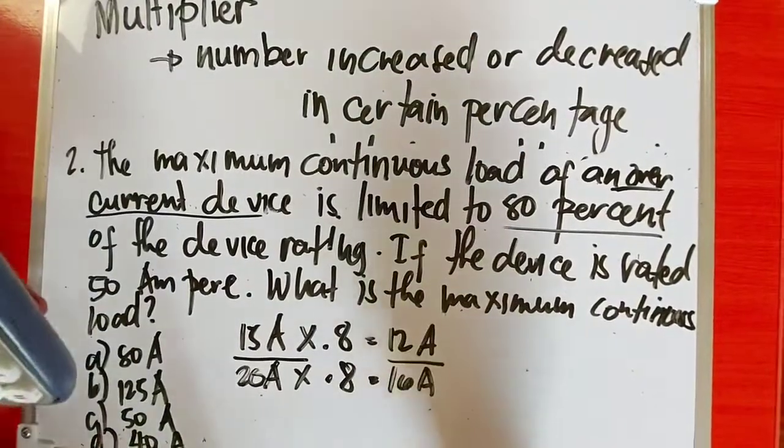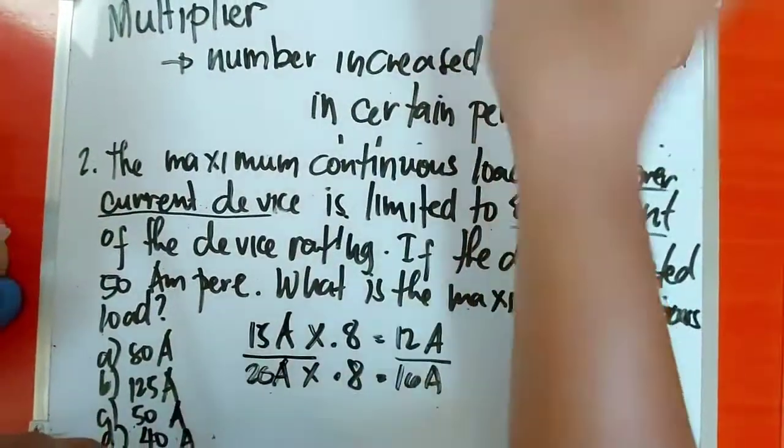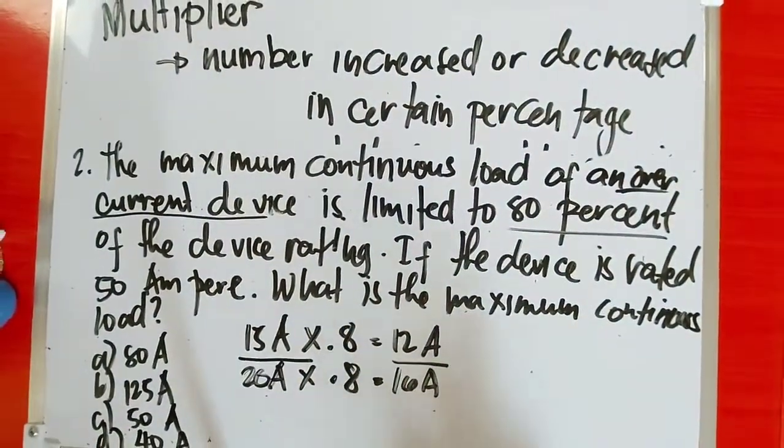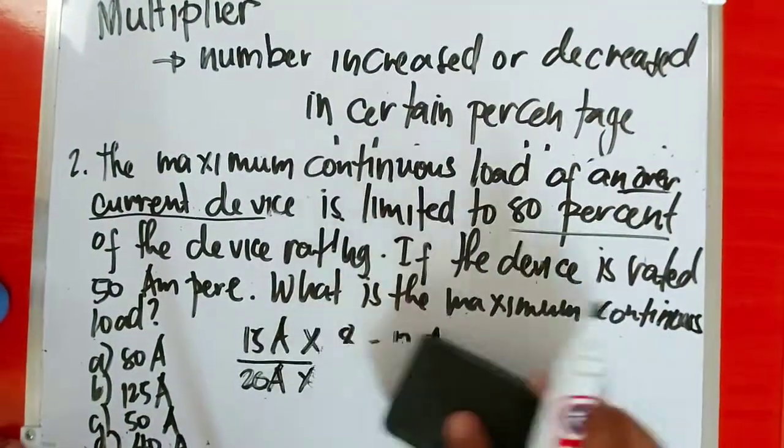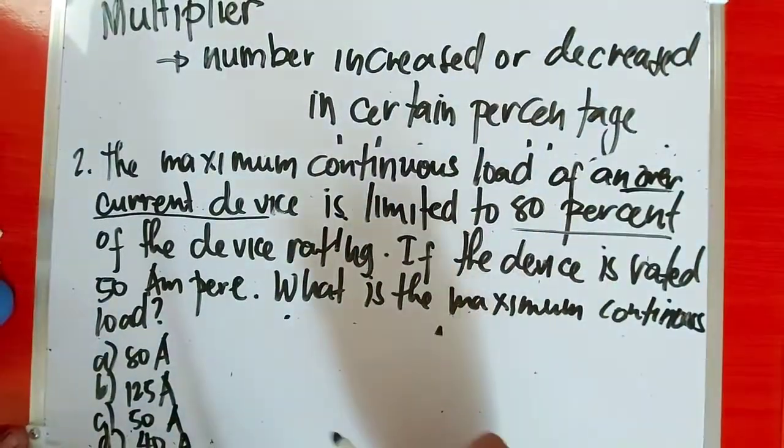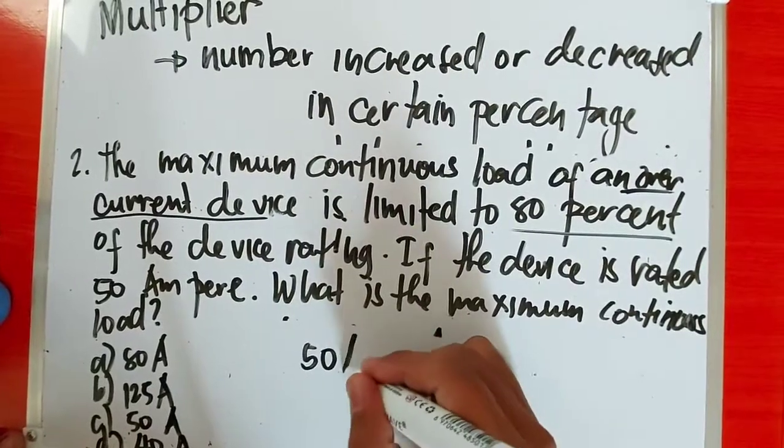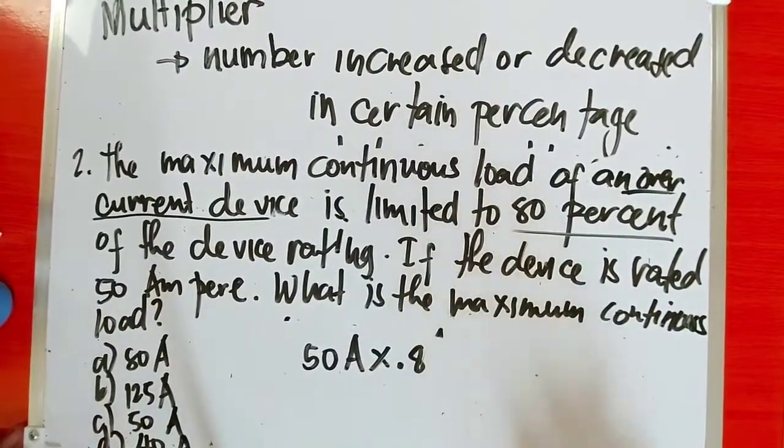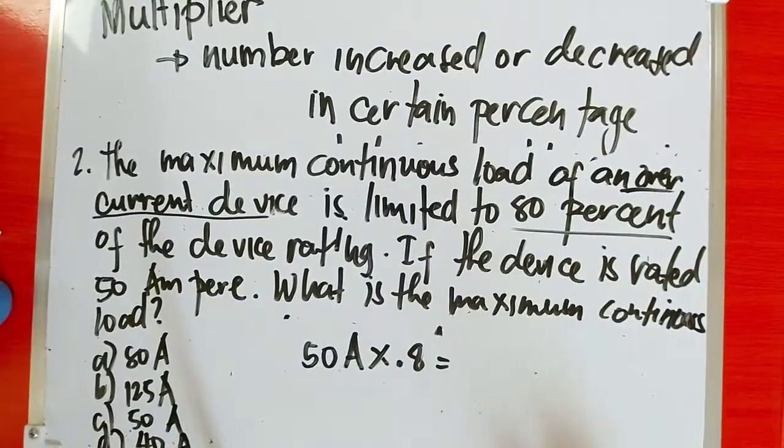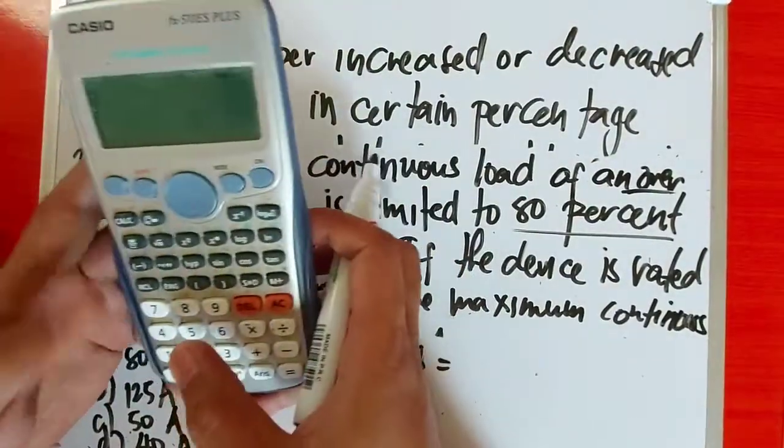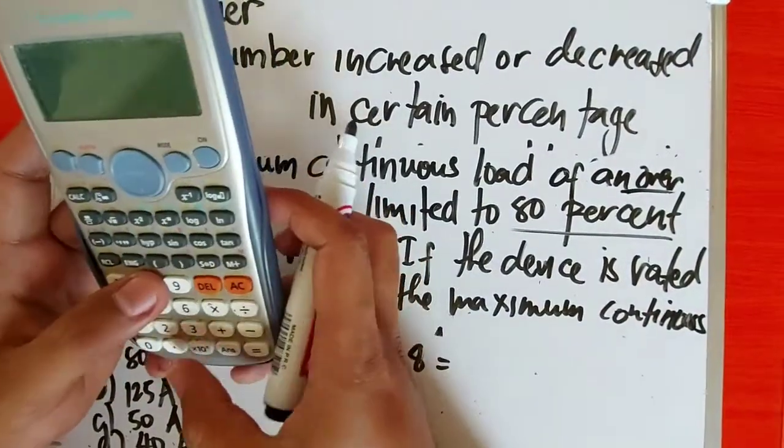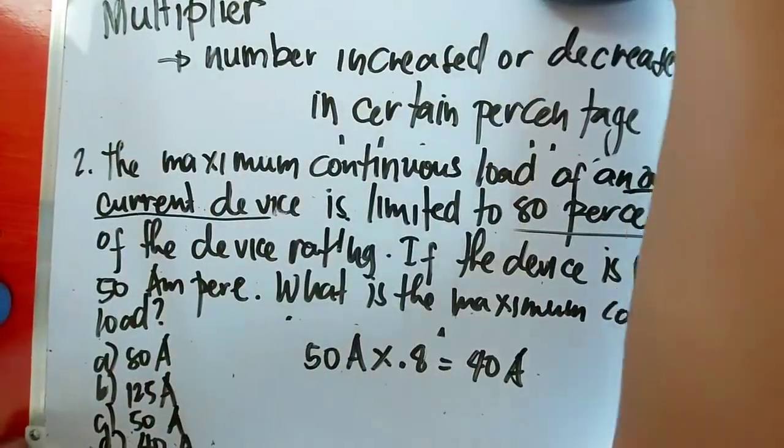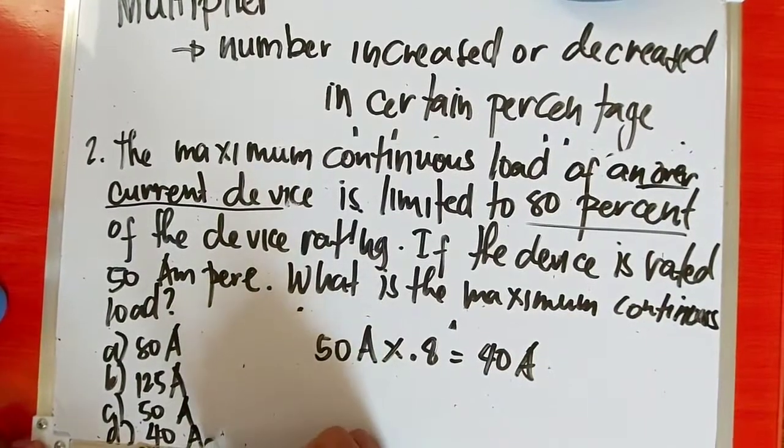Okay, so let's go back to the question. In this question, your device is rated 50 ampere. So if you have 50 amperes, same thing - you derate it, multiply by 0.8. So 50 ampere times 0.8 equals 40 ampere. So when you check the choices, the answer is letter D.